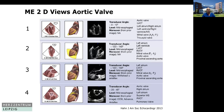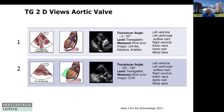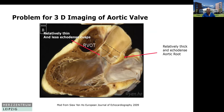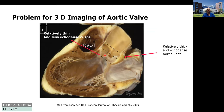Looking at the 2D standard views, we have four views in the mid-esophageal position for the aortic valve, and two views for the transgastric. The basic principle of the challenges of imaging the aortic valve is that the relatively thin and less echo-dense cusps of the normal aortic valve are surrounded by relatively thick and echo-dense tissue. No matter which position you have in the mid-esophageal position, you will always have to pass that echo-dense structure. That is in contrast to the mitral valve, where your transducer has a good view. So the aortic valve is much more challenging.